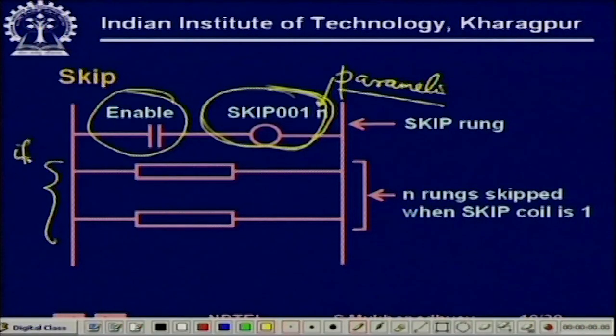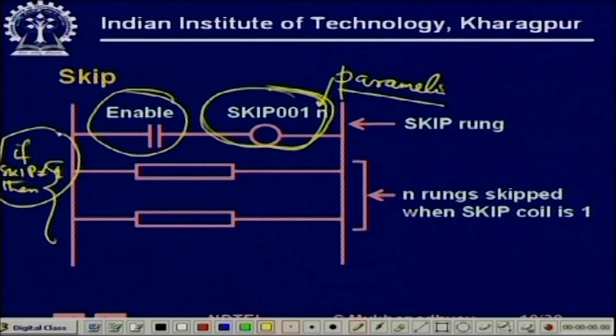It is like: if skip is not equal to 1, then the rungs will be executed. If skip is equal to 1, as long as it stays 1, the next n rungs will not be evaluated and they will be maintained at their old values.